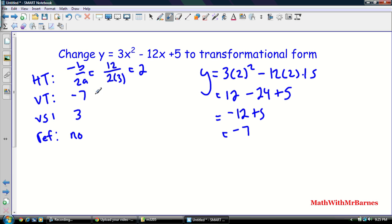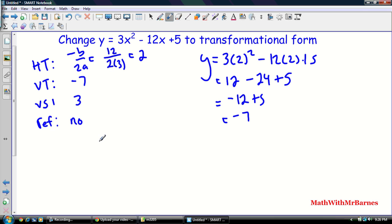All right, so now that we have all this, we could just simply write out my equations. My VS is 3, so we flip that, it'd be 1 over 3. Y, and my VT is the opposite, plus 7, is equal to, and my HT, x opposite minus 2, squared, so that's this guy.